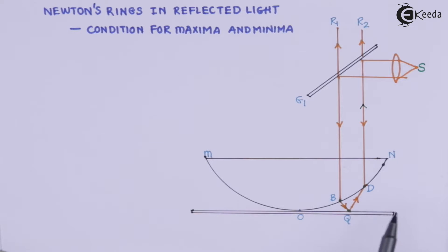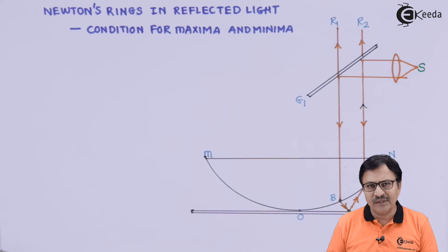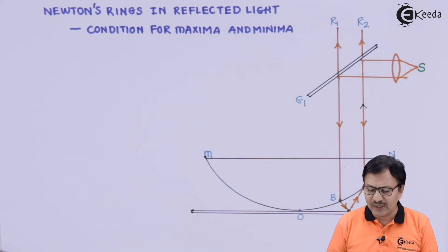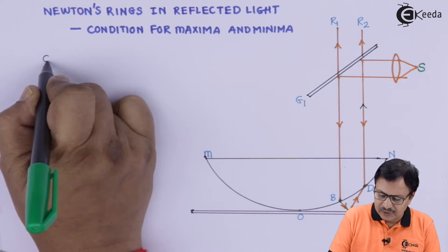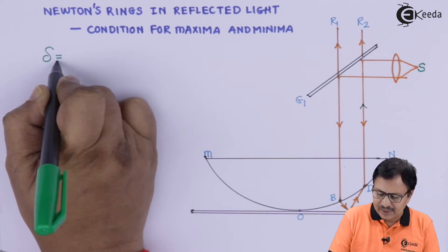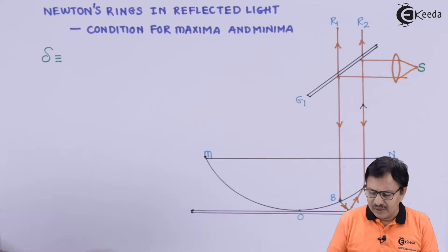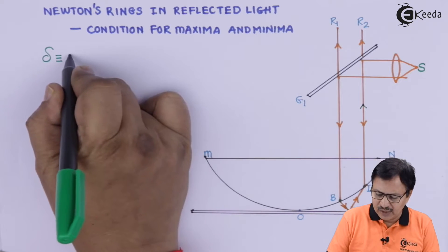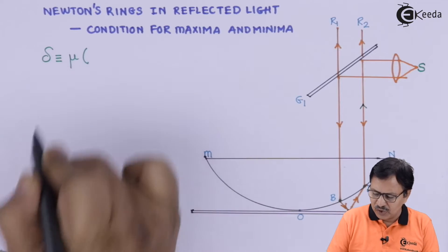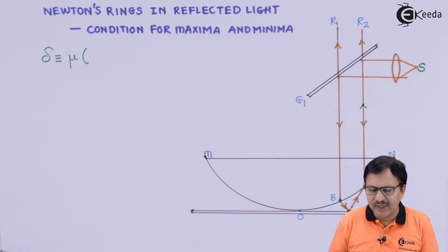So there is going to be interference between these two rays. When considering the interference between these two rays, we consider the optical path difference delta. This optical path difference is going to be equal to μ — the refractive index of the medium — times BQ plus QD.